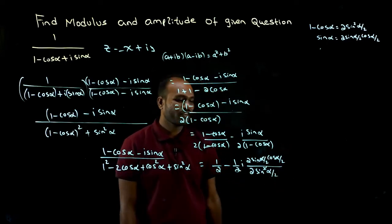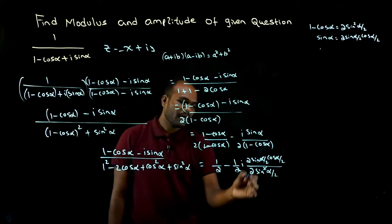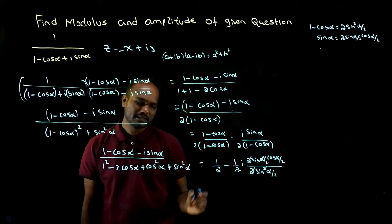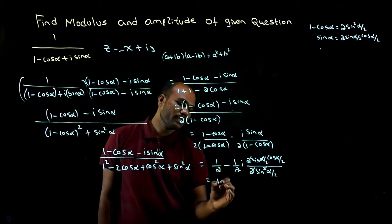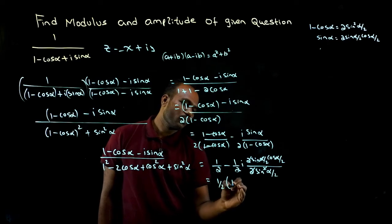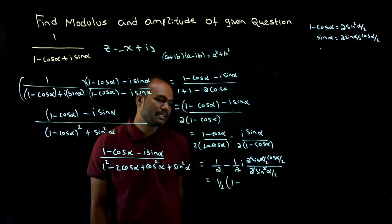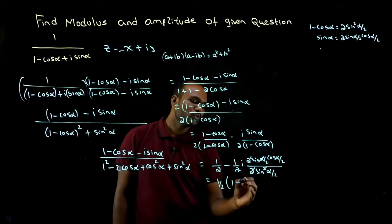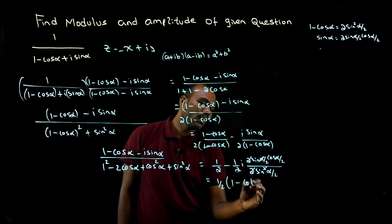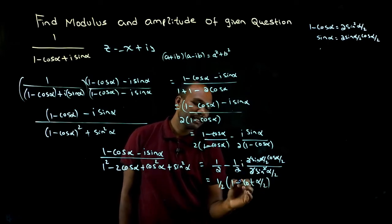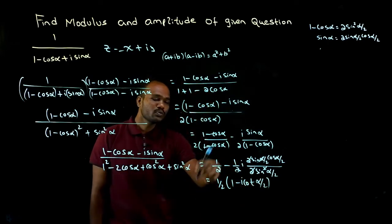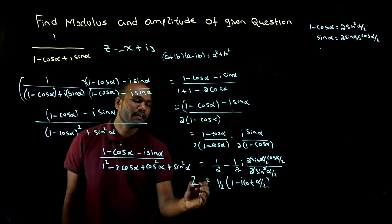The sine alpha terms cancel and the two's cancel as well. Taking one half as a common factor, we get one half times one minus i cot alpha by two. This is the value of z.